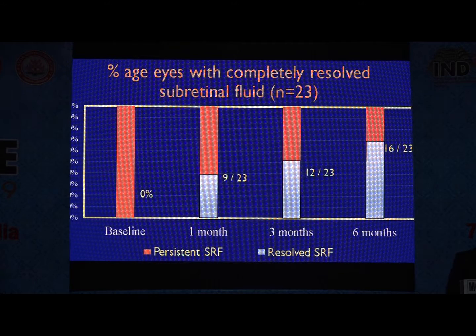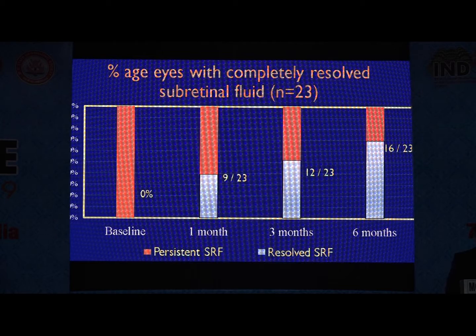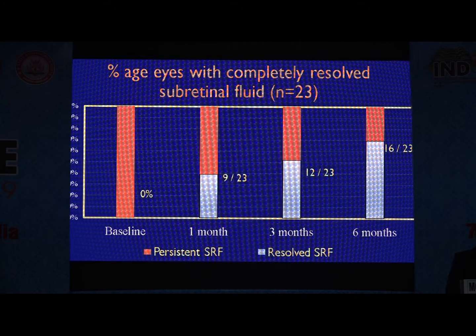Looking at the number of eyes with complete resolution of sub-retinal fluid: 9 out of 23 eyes at one month, improving to 12 at three months, and 16 out of 23 at six months.